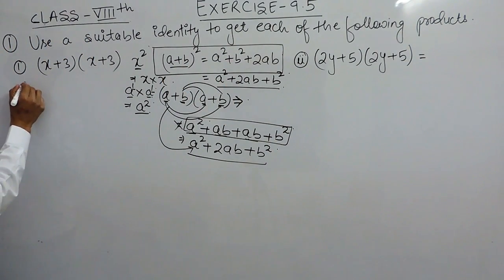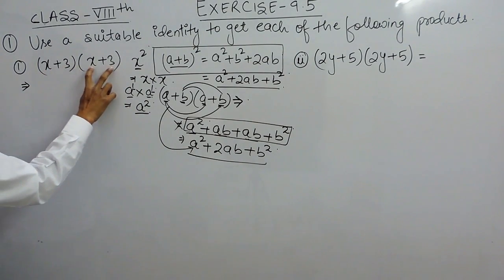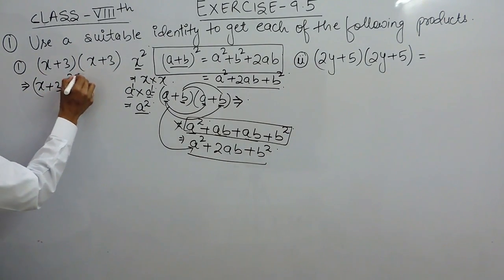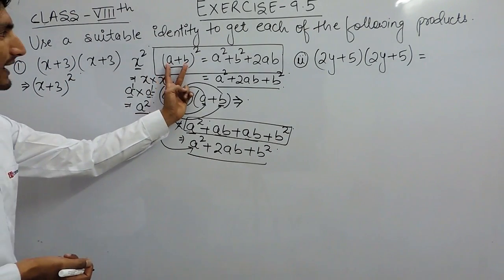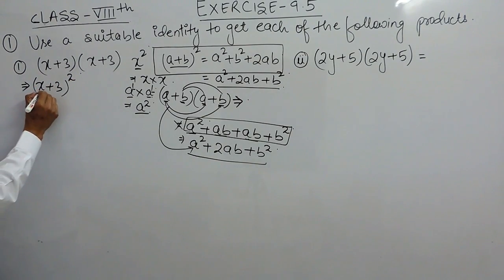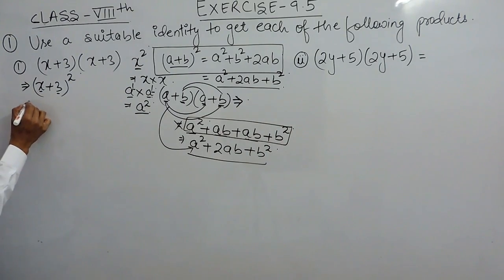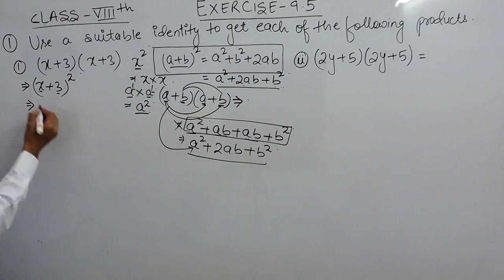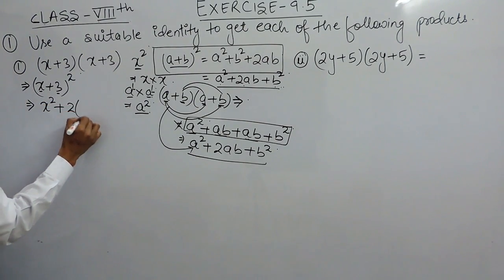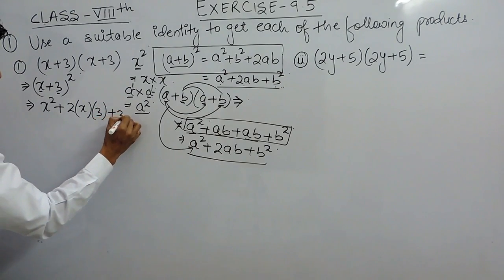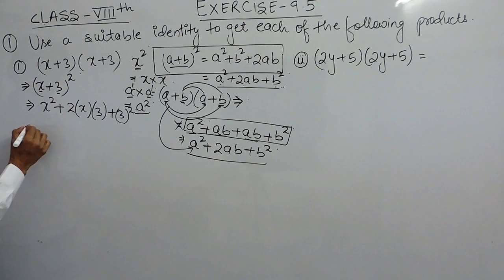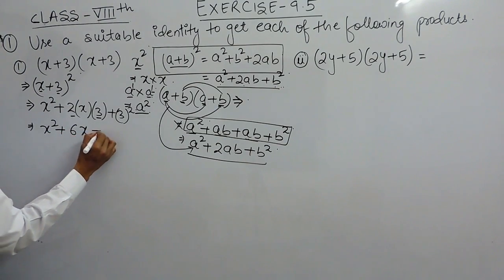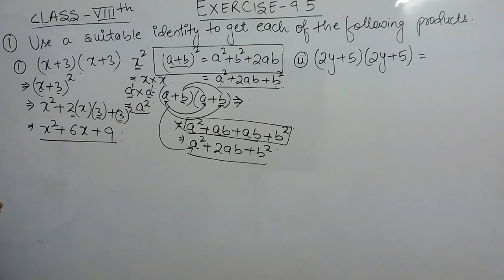For the first part, these two terms are the same, so this multiplication can be written as (x + 3) whole square. This is the same as (a + b) whole square where a equals x and b equals 3. Using the formula a square plus 2ab plus b square, we get x square plus 2 times x times 3 plus 3 square, which equals x square plus 6x plus 9. So this is the answer for the first question.